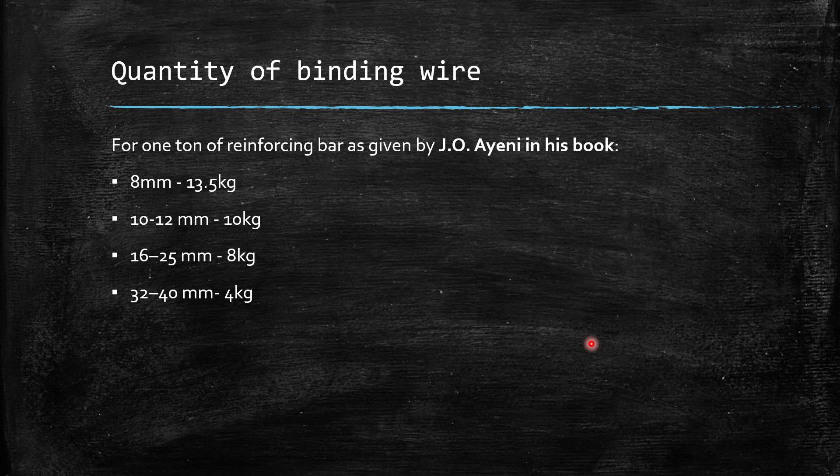For 32 to 40 mm bar, per ton of steel, we need 4 kg of binding wire.